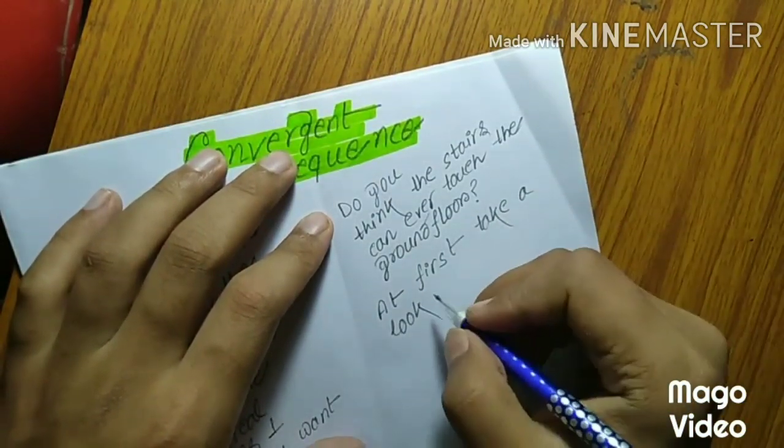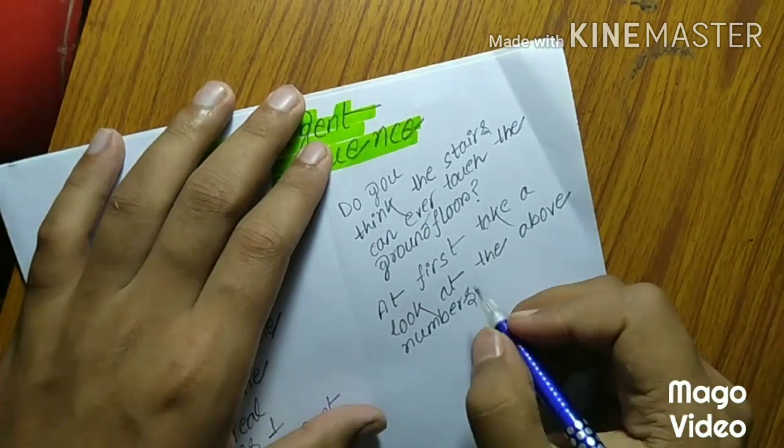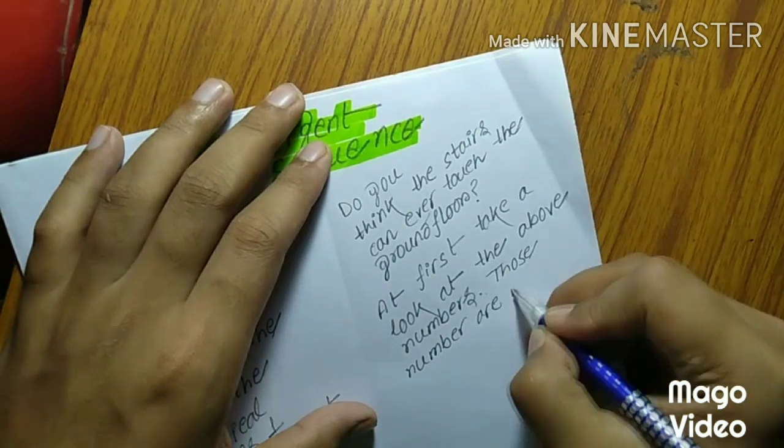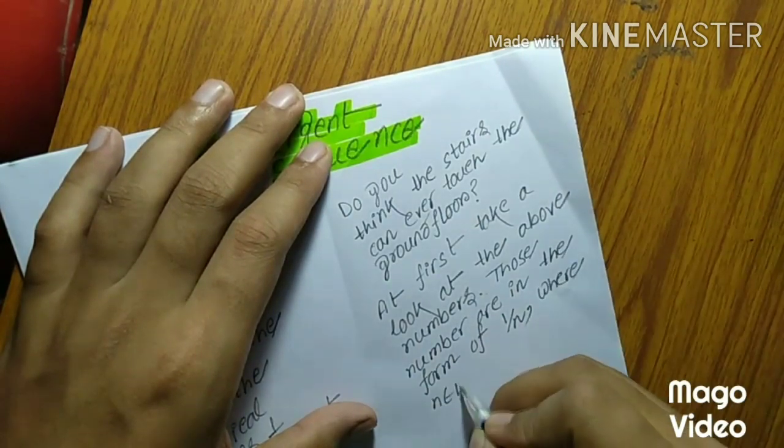At first, take a look at the above numbers. Those numbers are in the form of 1 upon n, where n belongs to N.